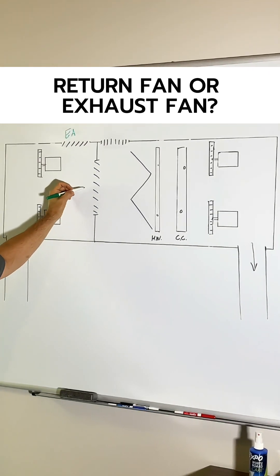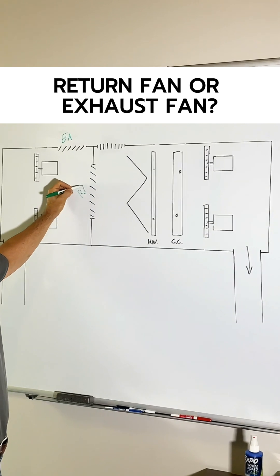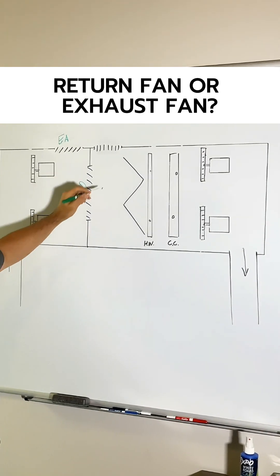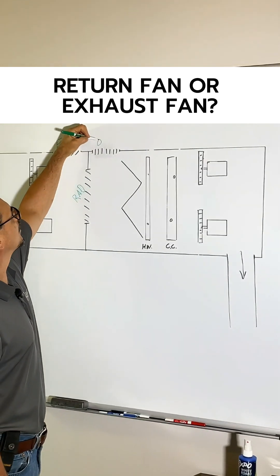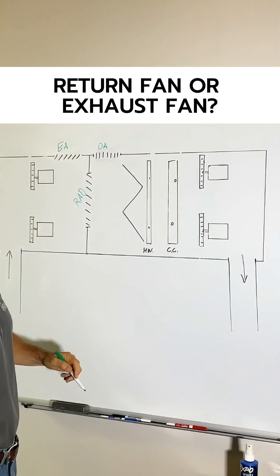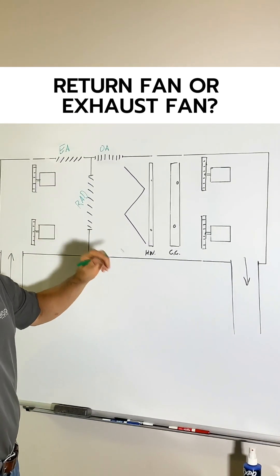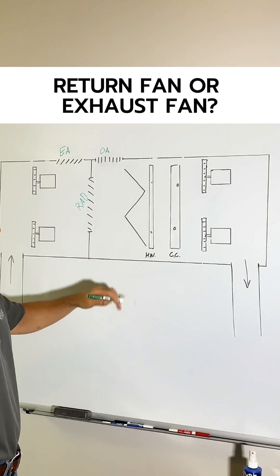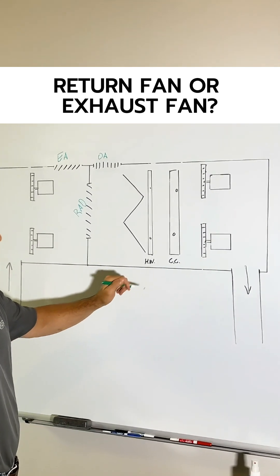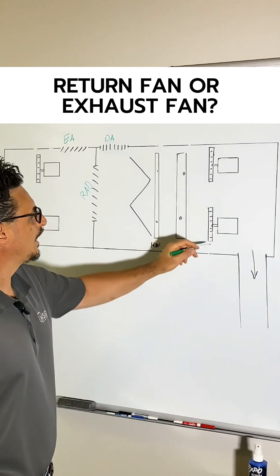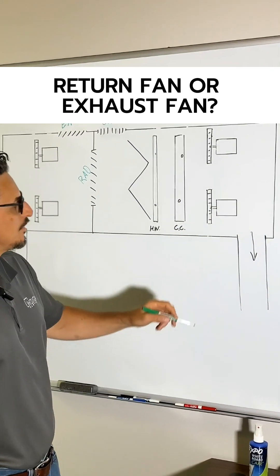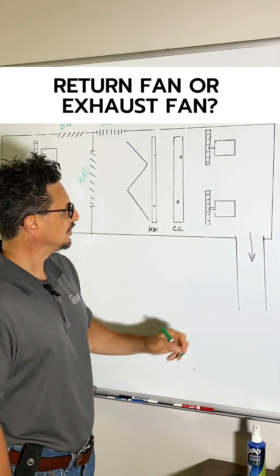This would be your return air damper, we'll call that a RAD, and this would be your outdoor air damper here. Pre-filter, obviously that could be a filter bank with bigger filters. Hot water pre-heat coil. Chill water cooling coil, and then your two supply fans and your supply fan plenum going out to the building.